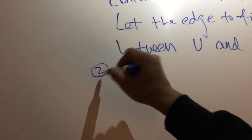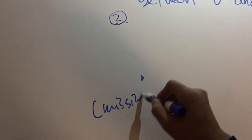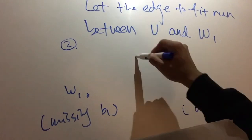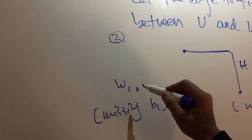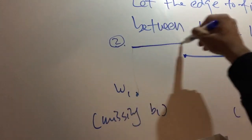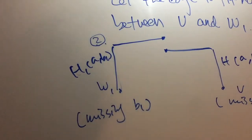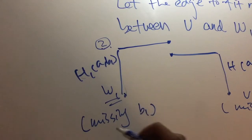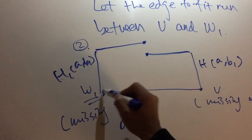Let's consider another case. Let color A be missing at V, and let another color B1 be missing at W1. There is a Kempe chain terminating at V colored by A and B1, and also a Kempe chain terminating at W1 colored by A and B1, and these two Kempe chains are disjoint. So we only need to swap the colors of this Kempe chain so that at W1 the missing color will be A. Then V and W1 have the same missing color, so we can use color A to color the edge VW1, and we are done.